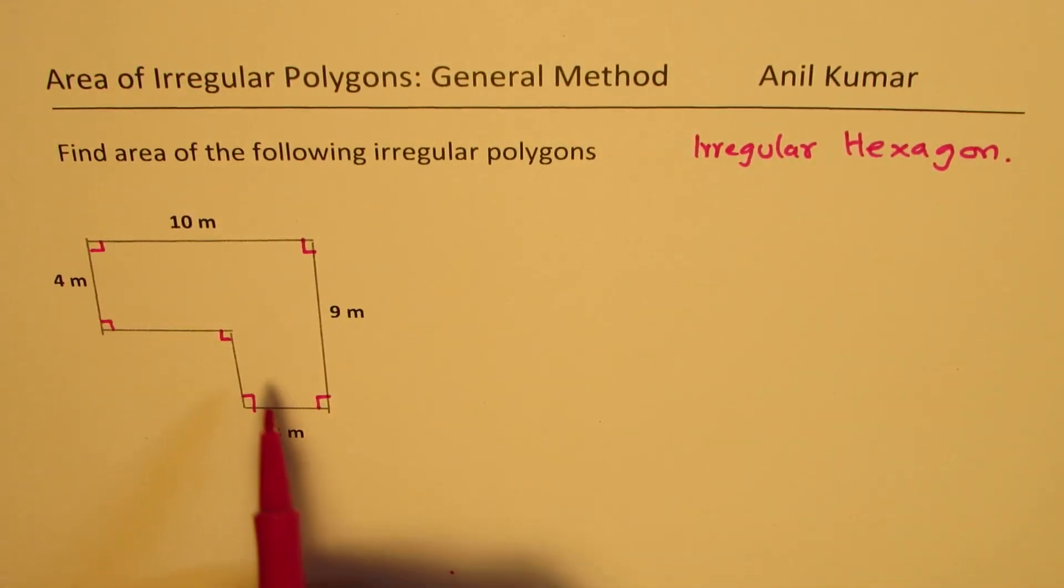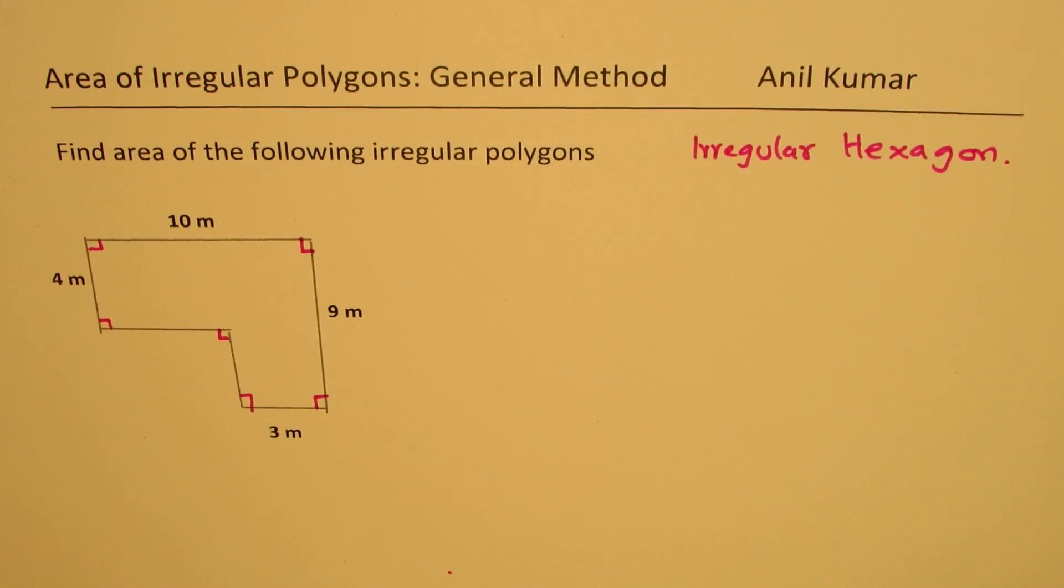Irregular since the sides are of different dimensions, different lengths, and hexagon since it has six sides. Now how do we find area of such a figure?